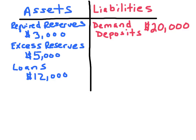There are two sides to a bank's balance sheet, also known as a T-account. One side represents the bank's assets — what the bank has — and the other side represents the liabilities and net worth.